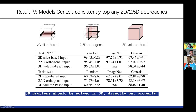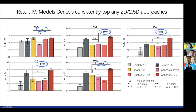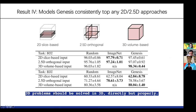But 3D needs to be done properly — we need Models Genesis. If we don't have Models Genesis and just learn a 3D model from scratch, it can possibly be outperformed by 2D ImageNet pre-trained models. That's why 3D problems should be solved in 3D directly, but properly, meaning we need a good pre-trained model.